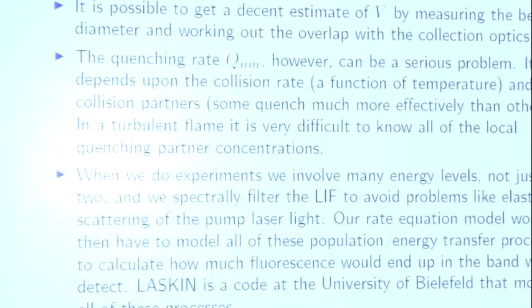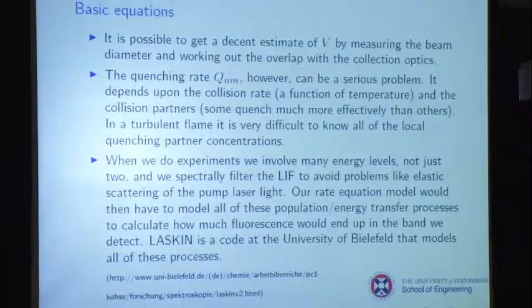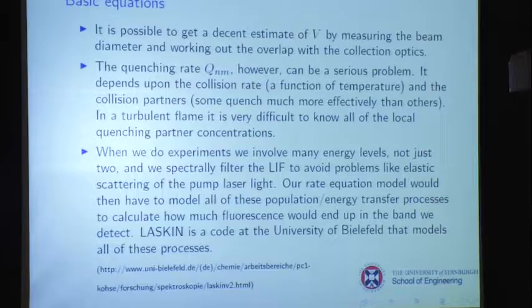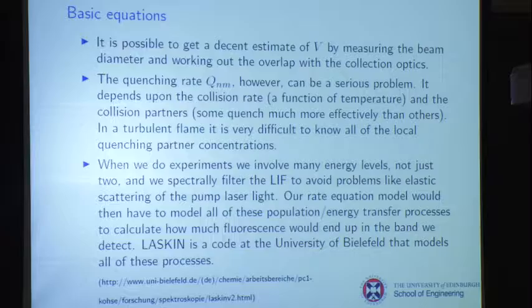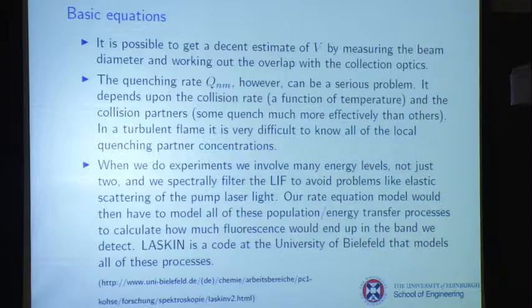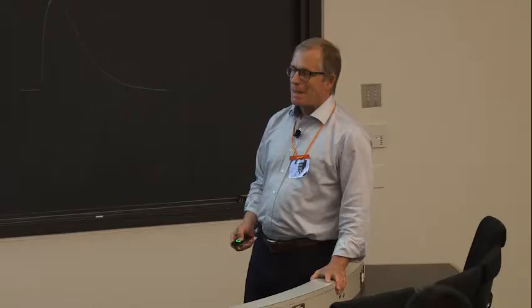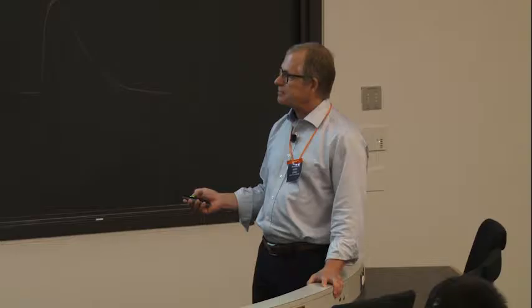When we do experiments, we're actually involving a lot of energy levels. That two-level equation is extremely useful — you can understand the physics — but it's not realistic. If you pump in the 0-1 band and detect in the 0-0 band, how do you model all of that energy transfer and emission? The University of Bielefeld has a code called LASKIN — like a chemical kinetics code, but using photon interactions and all energy transfer within the excited and ground states. They have it for OH and partially for NO as well.